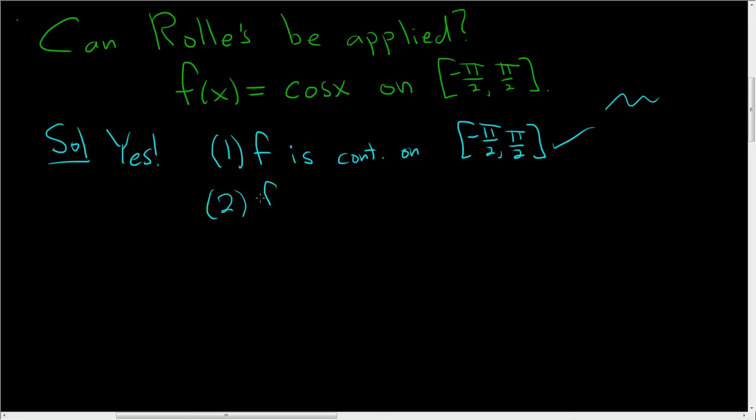Two, we have to determine if f is differentiable on the open interval, negative pi over 2 to pi over 2. Well, absolutely. Everyone knows that the derivative of cosine is negative sine. There's no sharp edges. There's no jagged edges. So it's nice and smooth. It's differentiable.